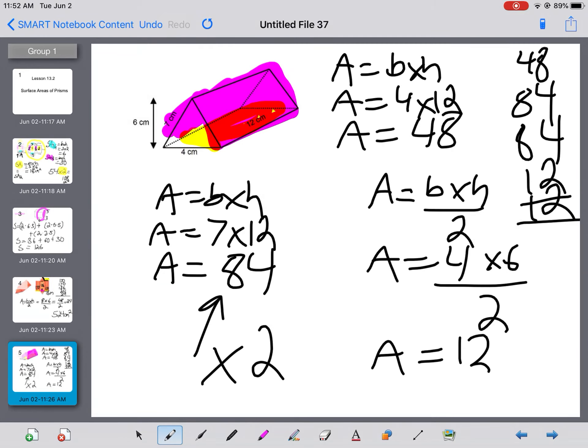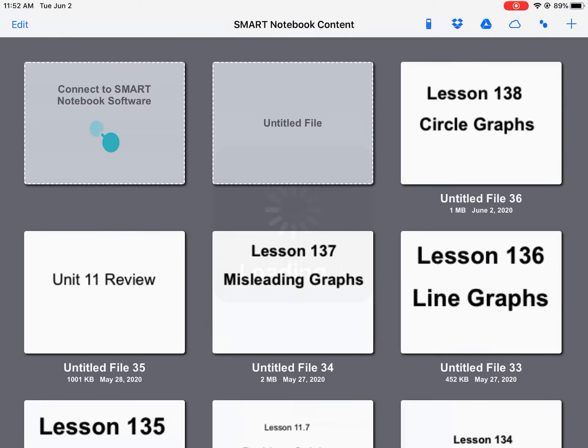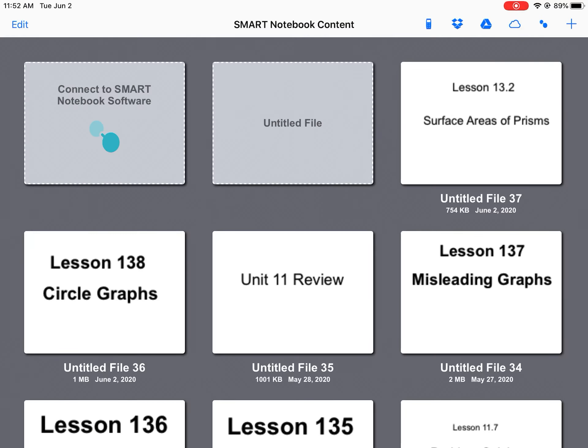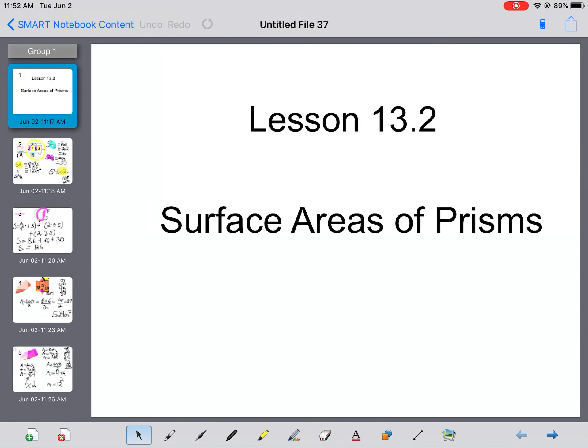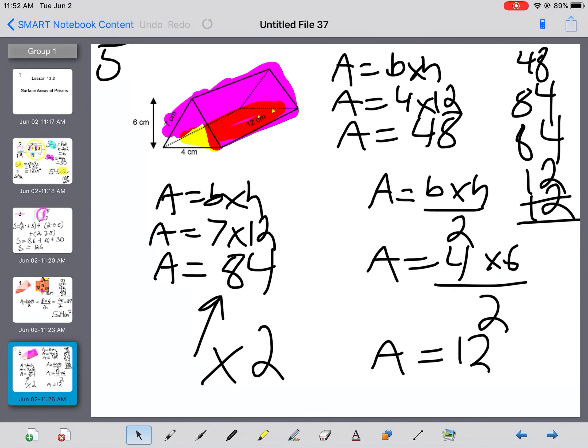One way, Grade 7, to make sure that you've done surface area properly is before you start, count all the faces and make sure you have five faces. Then when you add at the end, make sure you have five numbers to add up.